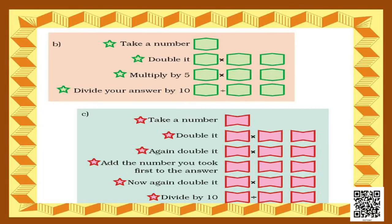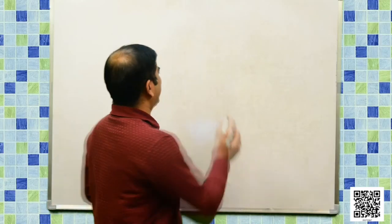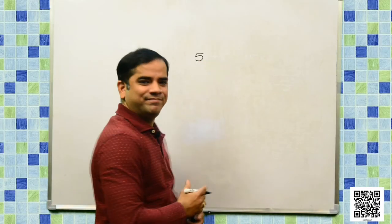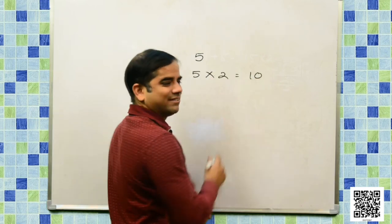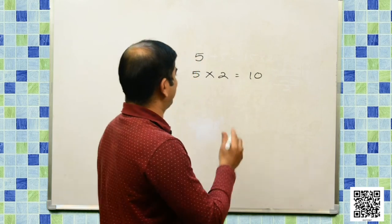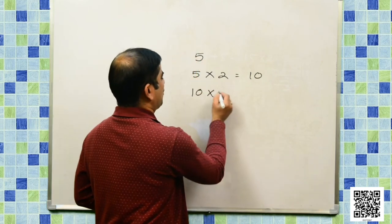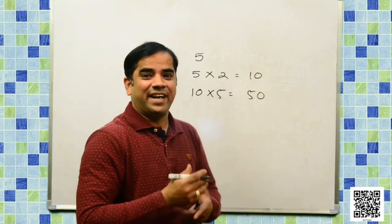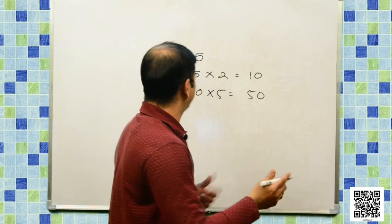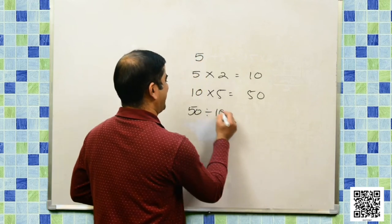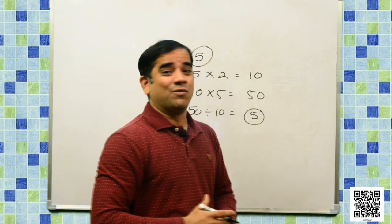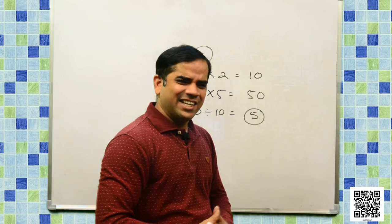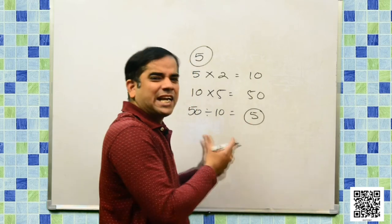Let us discuss another one. Just take a number — let me take the number 5. Double it: 5 times 2 gives 10. Now multiply by 5: 10 times 5 gives 50. Divide your answer by 10: 50 divided by 10 equals 5. It is the number itself which we took initially. This is also one kind of sequence.